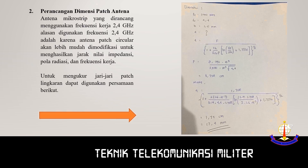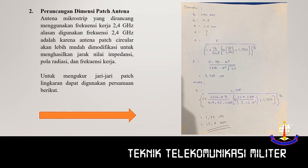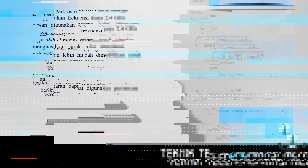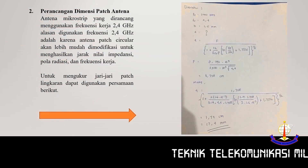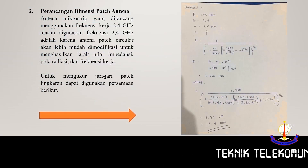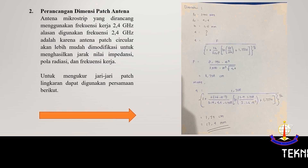Untuk mengukur jari-jari patch lingkaran, saya akan menggunakan persamaan ini. Diketahui: frekuensi kerja 2,4 GHz, ketebalan substrat 1,6 mm, dielektrik loss tangen 0,02, konstanta dielektrik 4,4. (To calculate the circular patch radius, I will use this formula. Given: operating frequency 2.4 GHz, substrate thickness 1.6 mm, loss tangent 0.02, dielectric constant 4.4.)